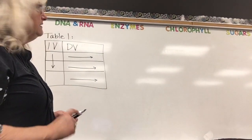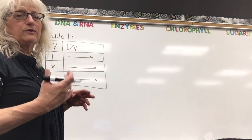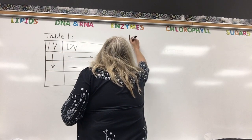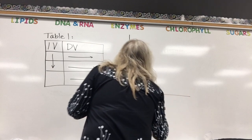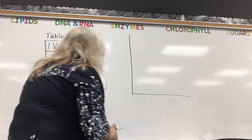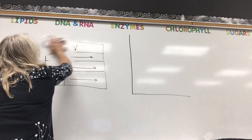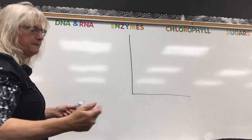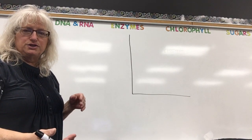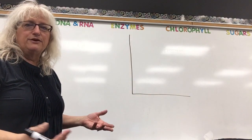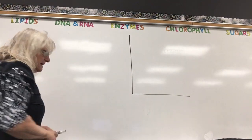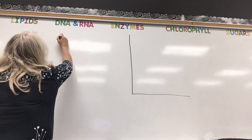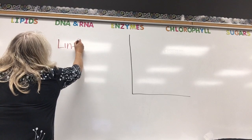We're going to take that data, condense it, and do a class average. We will then be graphing our data. When we're graphing, there are two types of graphs we're going to focus on this year — there are more types depending on what you're trying to show, and you'll learn those in math and physical sciences — but right now let's concentrate on the line graph and the bar graph.